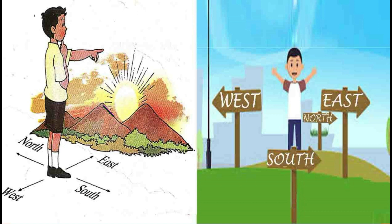Why do we use the Sun for direction identification? Because it rises daily and sets daily. So when the Sun rises, you can easily identify the direction — that is East.